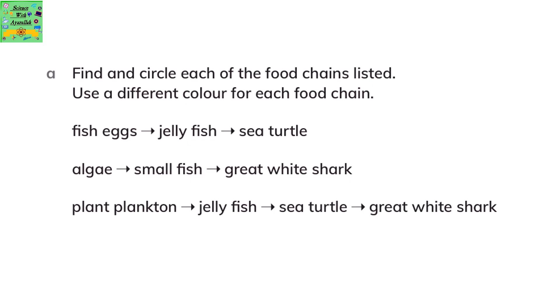The first food chain: fish eggs are eaten by jellyfish, and jellyfish are eaten by a sea turtle. The second: algae is eaten by small fish, and small fish are eaten by great white sharks. The third: plant plankton is eaten by jellyfish, jellyfish are eaten by sea turtle, and sea turtles are eaten by great white shark.